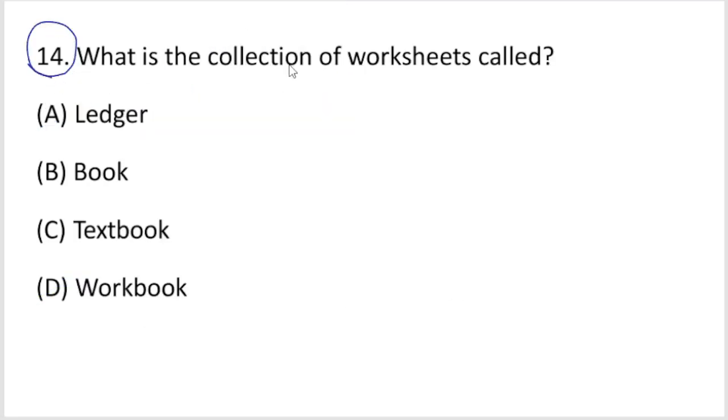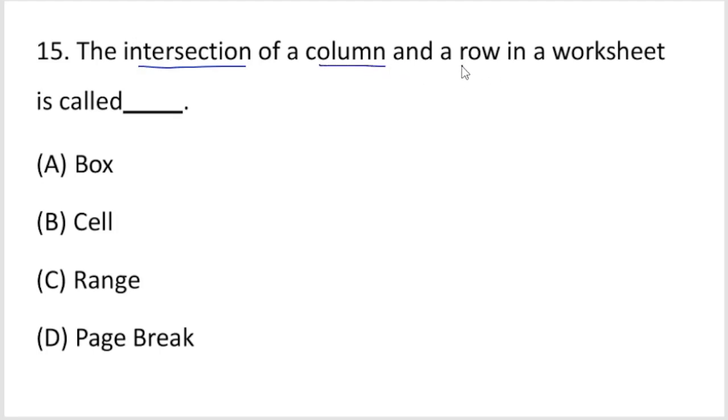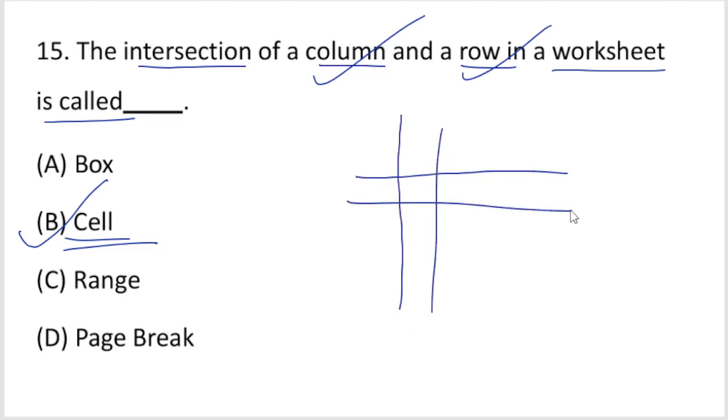Question 14: What is the collection of worksheets called? A workbook. Workbook in Microsoft Excel is a collection of worksheets. Next question: The intersection of column and row in a worksheet is called a cell. Rows are horizontal and columns are vertical.